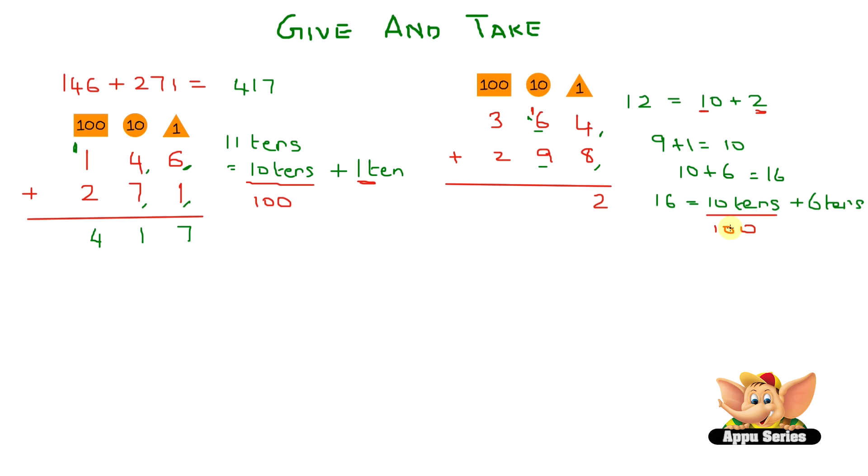So in the hundreds group we've now carried over 1. So we have 1 plus 3 plus 2 equals 6. So the answer is 662. Pretty simple. Great.